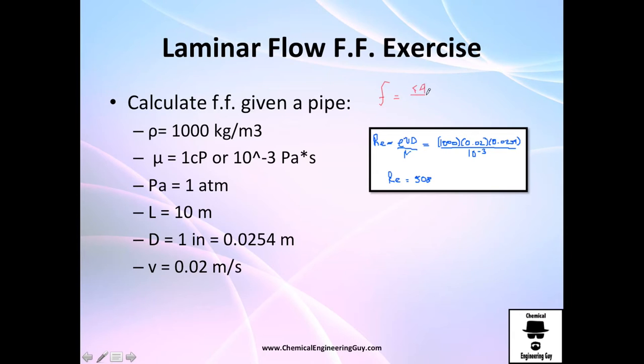For the friction factor, recall that we need 64 divided by Reynolds, so we need to calculate the Reynolds number. Reynolds number is given by the density, which we have, velocity, very slow, the diameter, we have it, and the viscosity, which is right here.